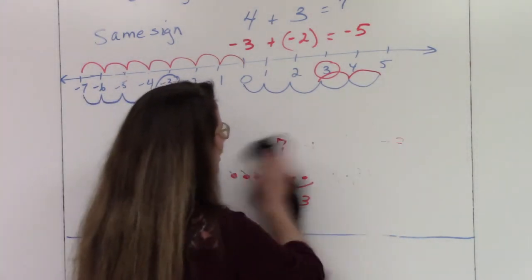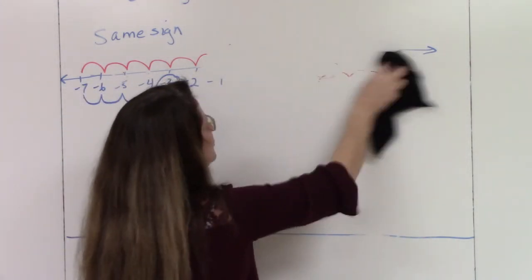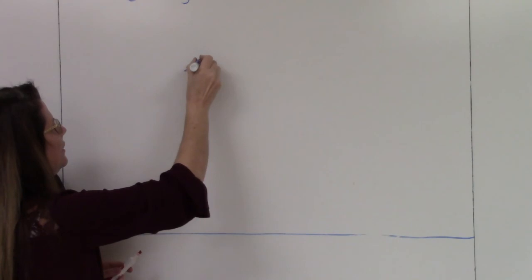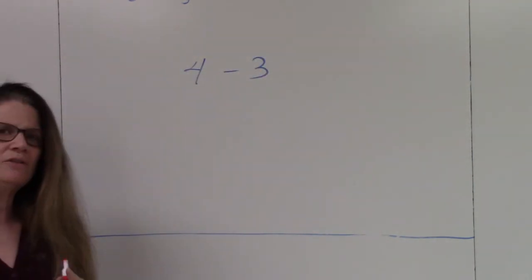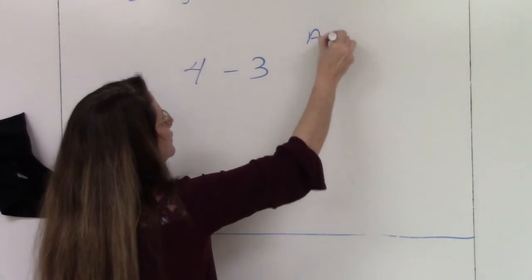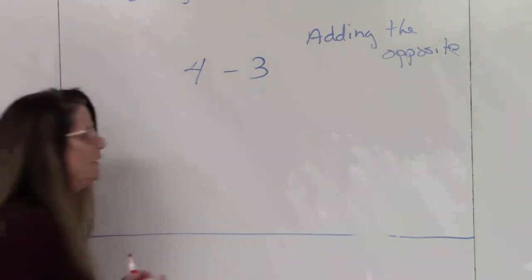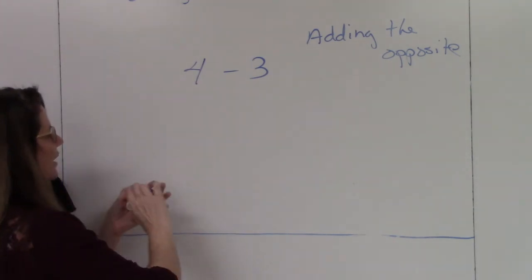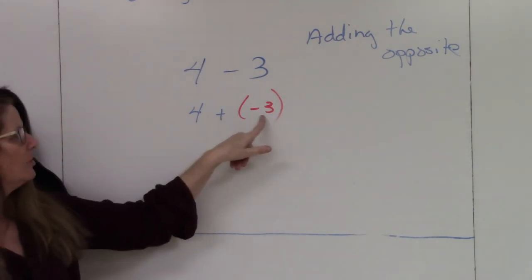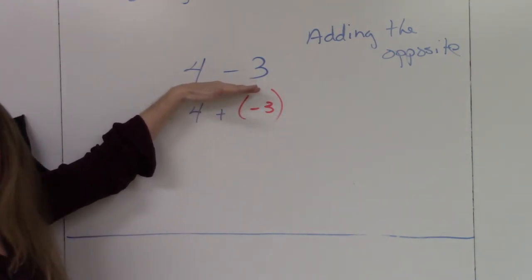That covers adding positives and negatives. Now let's look at subtraction. Subtraction and addition are really the same thing — just opposite signs. Anytime you see a subtraction sign, think of it as a negative. We are no longer subtracting; we are adding the opposite. So you can rewrite the expression: a positive four minus three becomes four plus a negative three. The opposite of positive three is negative three.